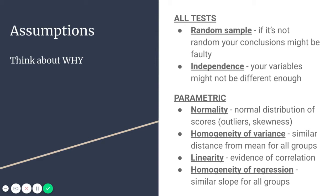Homogeneity of variance refers to the fact that there should be a similar distance from the mean for all the groups. So if you're comparing men and women and all the women's scores are very close to the mean but the men's scores are really spread apart, there's probably something there that you need to figure out as to why those scores don't appear the same way.